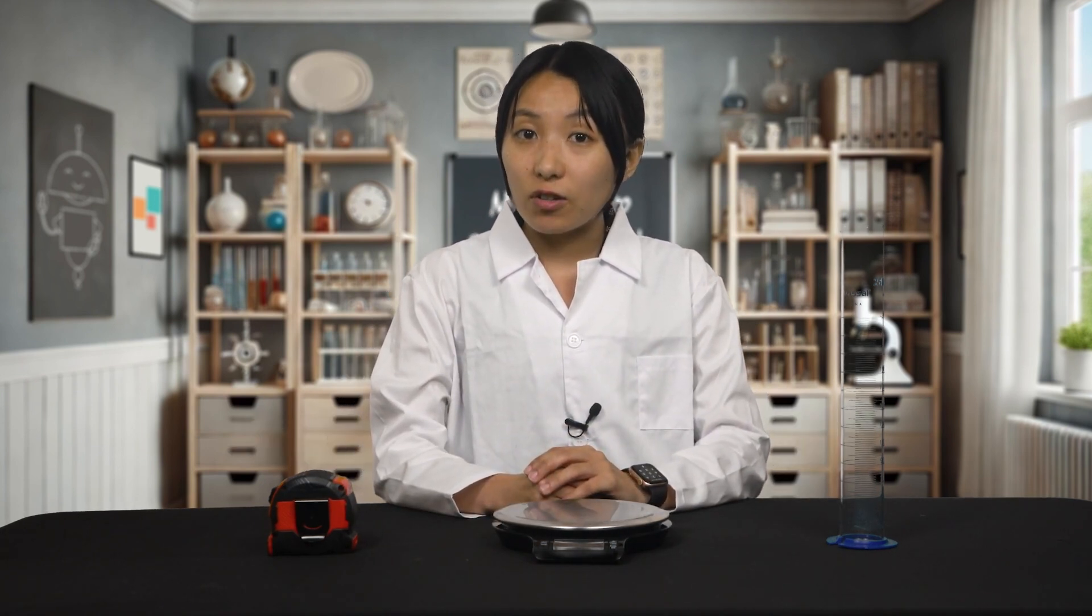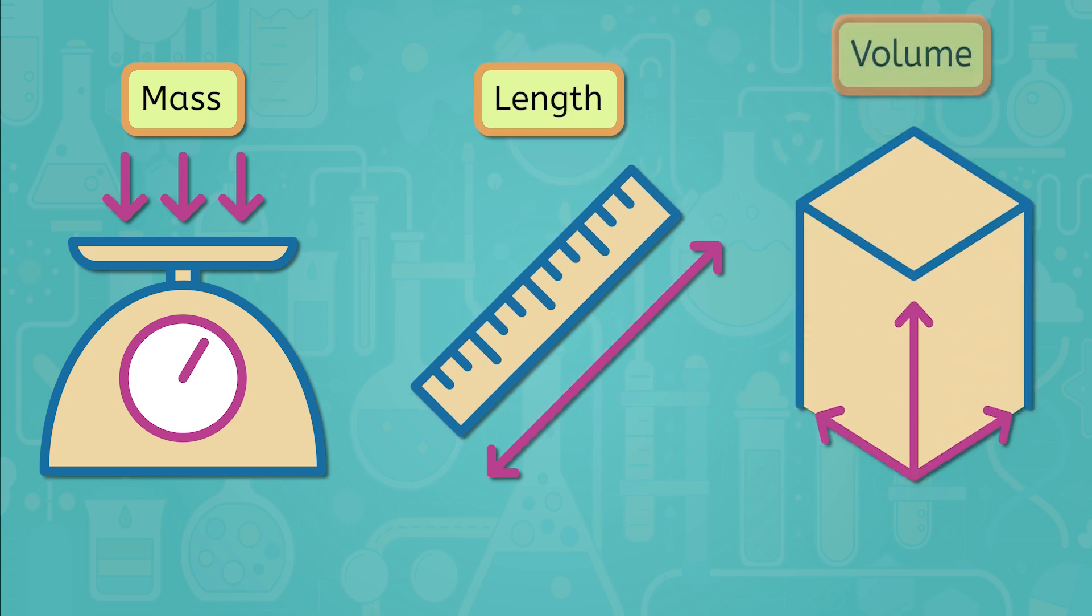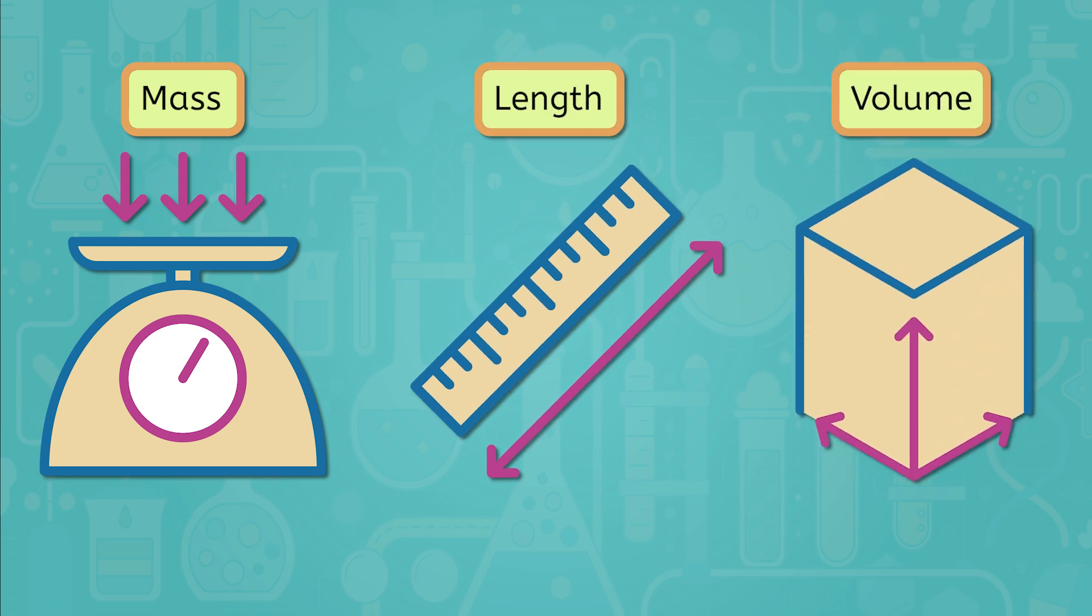You should have already read through the lab procedure and collected the necessary materials. So let's take a moment to get all of these materials organized and ready. Our most important materials today will be our measurement tools. We'll be taking three kinds of measurements in the metric system today. Do you remember what they are? Today, we'll measure mass, length, and volume, and we'll need special tools for each.